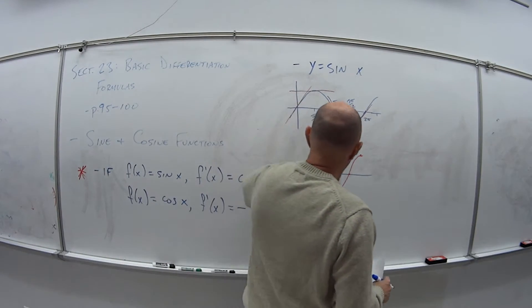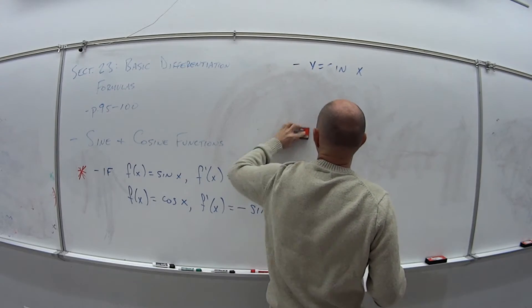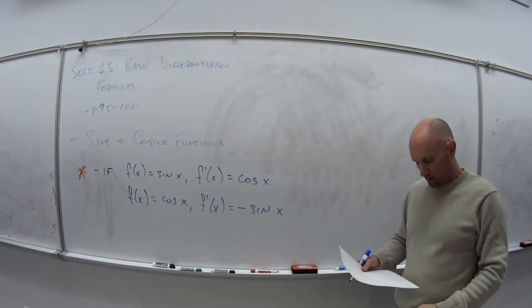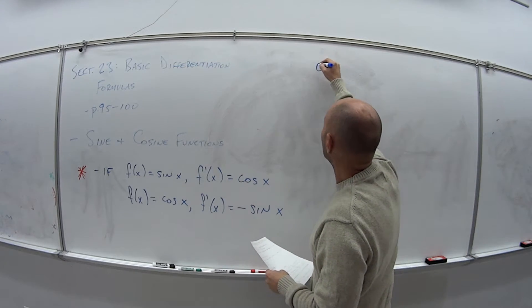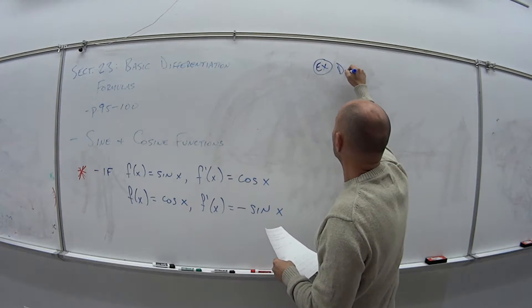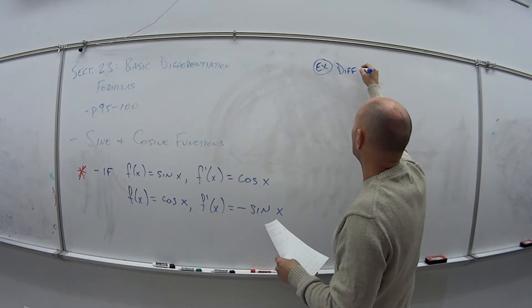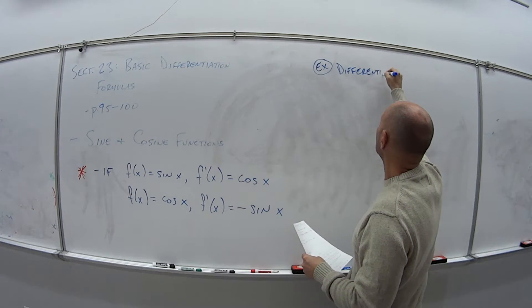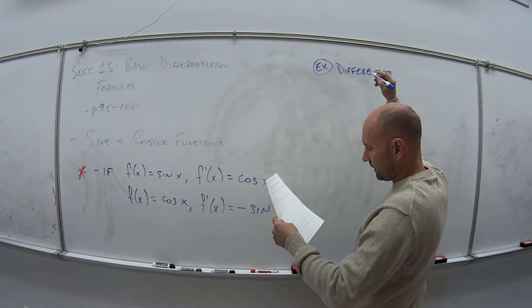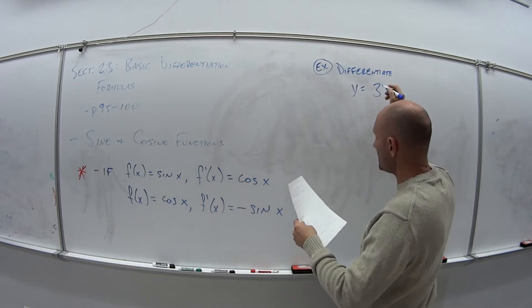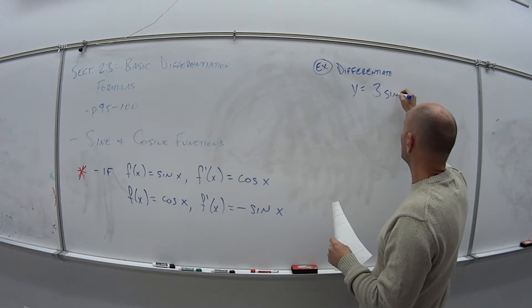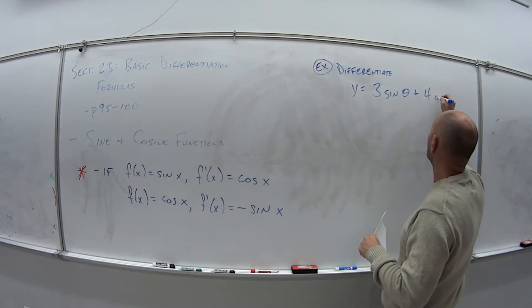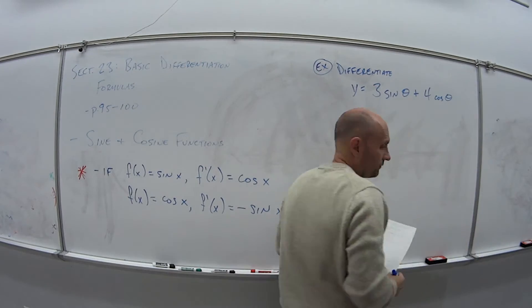Let's look at a quick example that will wrap up this video. As I sort of alluded to it, it's a quick one. So let's say we have the example we want to differentiate, i.e., we want to take the derivative, the following function: y is equal to 3 sine of theta plus 4 cosine of theta.